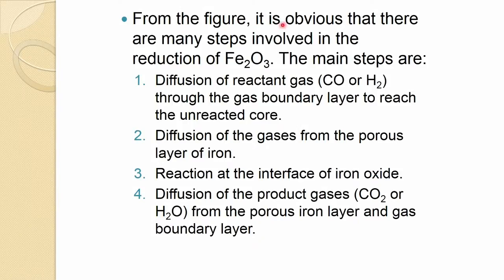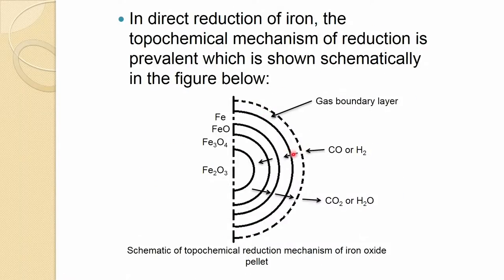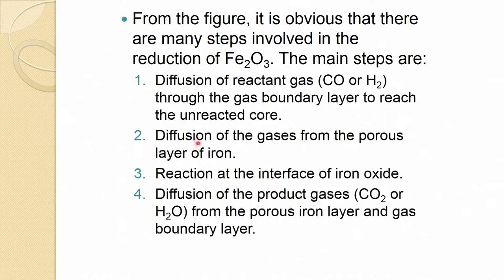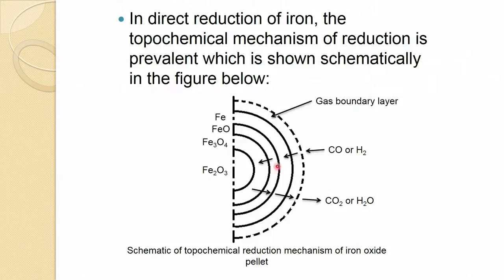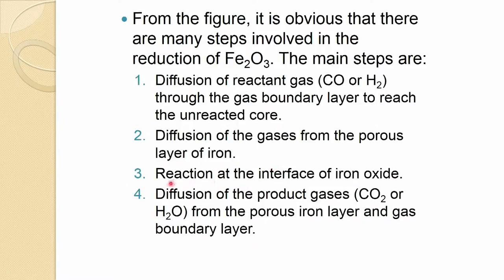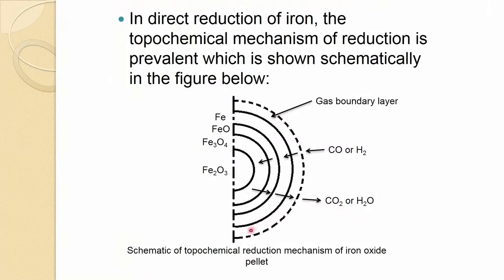From the figure it is obvious that many steps are involved in the reduction of hematite. The main steps are: diffusion of reactant gas (CO or hydrogen) through the gas boundary layer to reach the unreacted core; diffusion of the gas through the porous iron layer; reaction at the iron oxide interface; and diffusion of product gas (CO₂ or H₂O) from the porous iron layer and gas boundary layer.